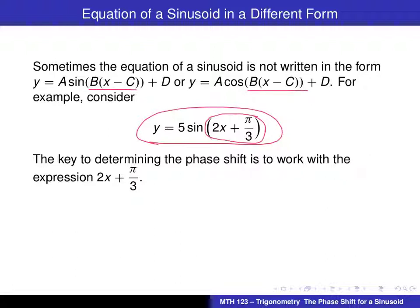Okay, we can still look at this and say, okay, in this example, A equals 5. B, what's multiplying x, will give us the B, that's 2. And in this case, the vertical shift, or D, is equal to 0. What we don't see immediately is what the value of C is.